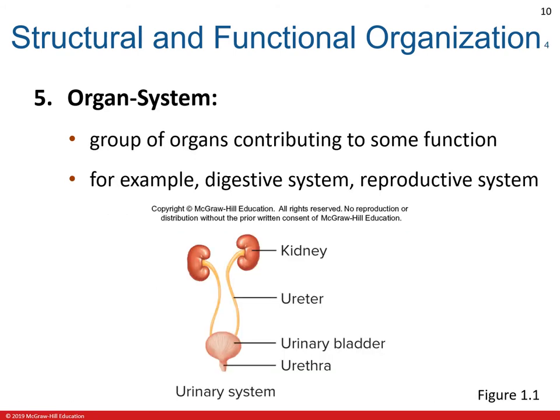As organs come together, they are considered to be an organ system. An organ system is a group of organs classified as a unit because of a common function or set of functions. For example, the kidneys produce urine, which is transported by the ureters to the urinary bladder, where it is stored until eliminated through the urethra. Another example is the digestive system, which takes in food, processing it into nutrients carried by the blood of the cardiovascular system to the cells of other systems. These cells use the nutrients and produce waste products carried by the blood to the kidneys of the urinary system, which then remove the waste products from the blood.